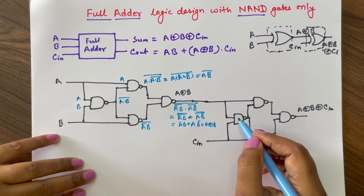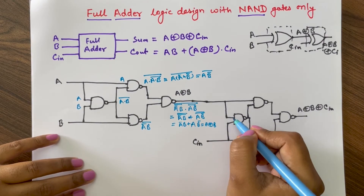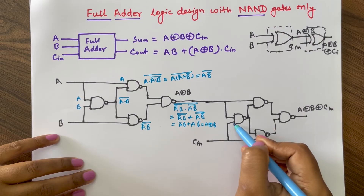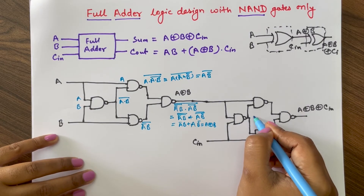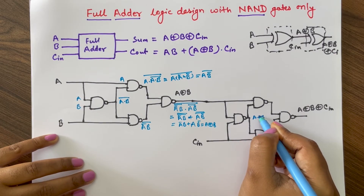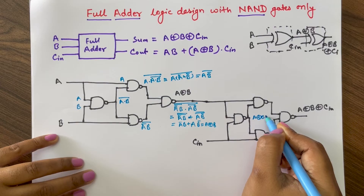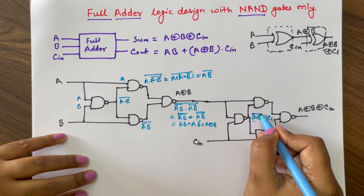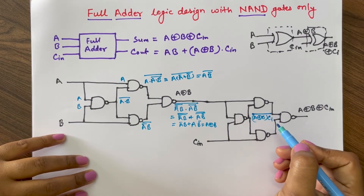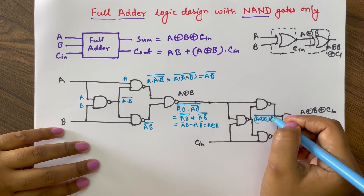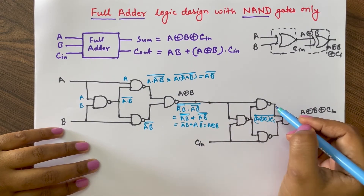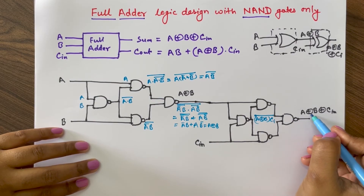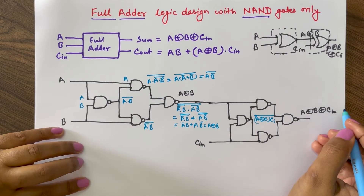Now for the next stage: the input to the NAND gate is A XOR B and C_in, so the output is (A XOR B)·C_in whole bar. Writing similar expressions for the remaining three NAND gates in the second XOR stage, we finally get A XOR B XOR C_in.